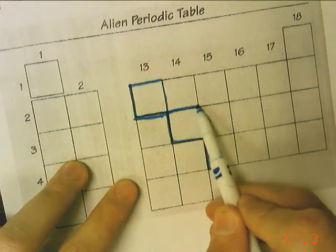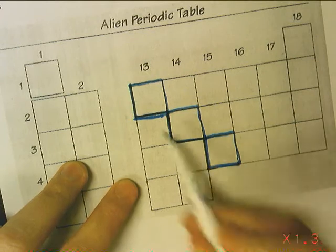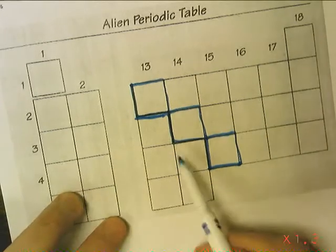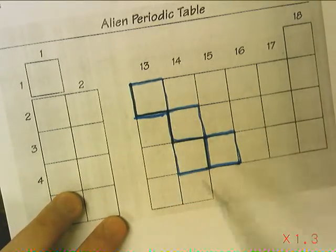First thing I'll do is mark the metalloids using the pattern of one, two, three, four down the stairs, and then two under. So these boxes here are metalloids.